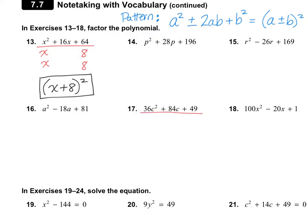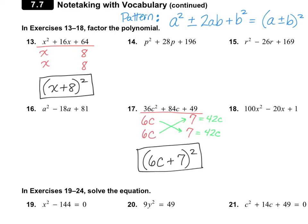Let's take a look at number 17. I do have a perfect square — the square root of 36 is 6, so 6c and 6c. I also have a perfect square in the back: 7 multiplied by 7. Cross-multiplying gives 6 times 7 equals 42, and 42 plus 42 equals 84, which matches the middle term. So I have the pattern, and the answer is 6c plus 7 times 6c plus 7, which simplifies to 6c plus 7, all quantity squared.